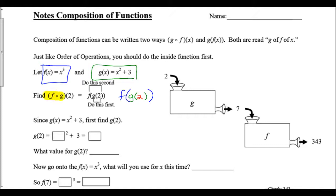We're trying to find f(g(2)), which we can also write with nested parentheses. Regardless of the method shown, we need to do g(2) first because that's the inside function. The g function is shown in green and f is shown in blue. We plug 2 into g(x) = x² + 3: that's 2² + 3 = 4 + 3 = 7.